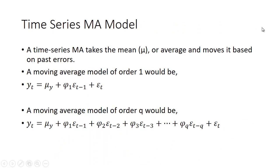So when we're looking at a time series moving average model, we also care about an average, but we're looking at it from a little different perspective. So a time series MA takes the mean or the average, and we'll call that mu, and moves it based on past errors. So a moving average model of order 1 would be, for example, y_t equals mu_y, which is the average or the mean of y, plus some coefficient, we'll call it phi 1, times the error from the previous period. And then you're going to have an error in this period as well.